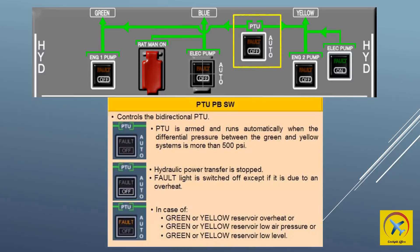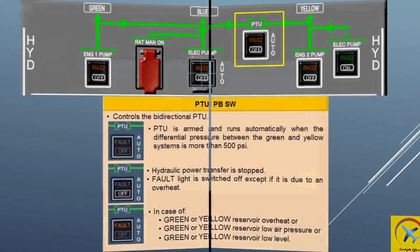PTU fault: the fault light illuminates amber when the green or yellow reservoir is at low level, overheat, or low air pressure. The fault light extinguishes when the PTU switch is selected off, except during an overheat, when the light remains illuminated as long as the overheat is present. When off is selected, both green and yellow PTU electro-hydraulic valves are energized and closed, and hydraulic power transfer stops.